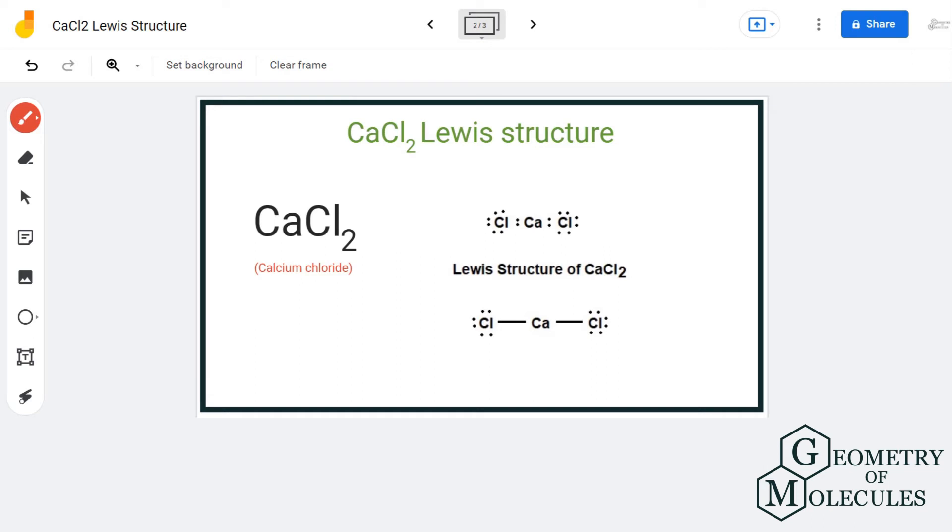You can also write it as Ca plus and Cl minus because calcium is literally just giving away its electrons. It is not sharing these electrons. Whenever you come across such compounds that are made up of metals and non-metals, remember this.